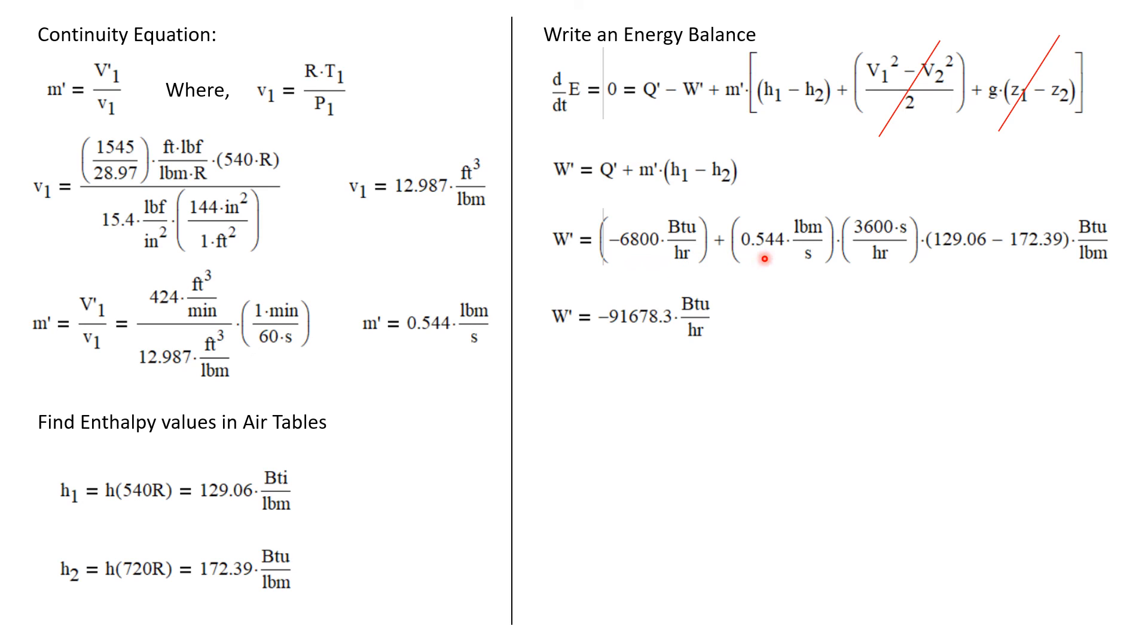We can just plug them in here. I will convert the mass flow rate from pounds mass per second into pounds mass per hour. And I calculate that the power requirement of this compressor is 91,678 BTUs per hour.